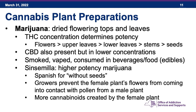In terms of cannabis plant preparations, the most commonly known is marijuana — the dried flowering tops and leaves of the cannabis plant. THC concentrations determine the potency: the flowers have the most THC, greater than the upper leaves, greater than the lower leaves, then the stems and seeds with the lowest concentrations. CBD is also present in marijuana but in lower concentrations. Marijuana is smoked, vaped, and consumed in beverages and food known as edibles.